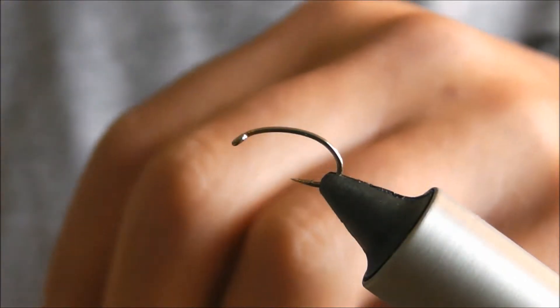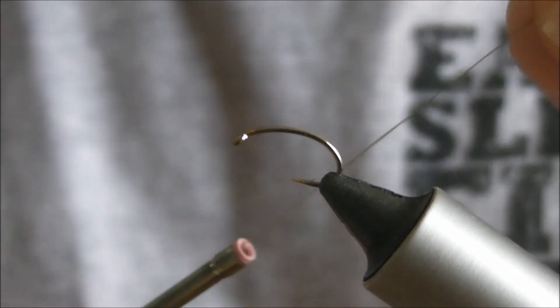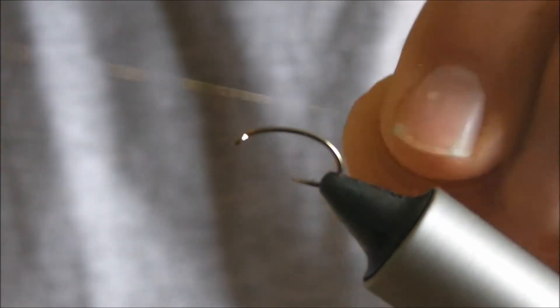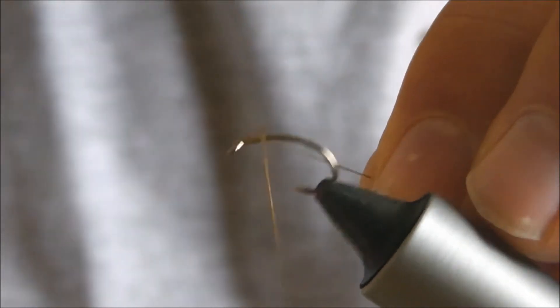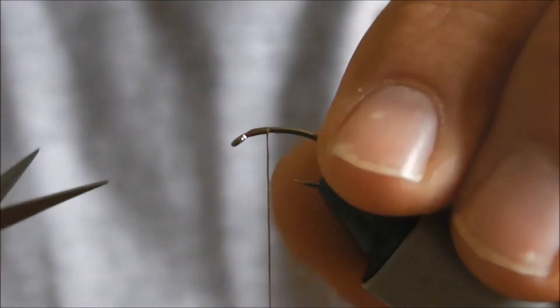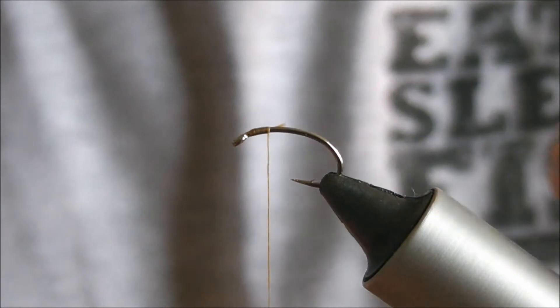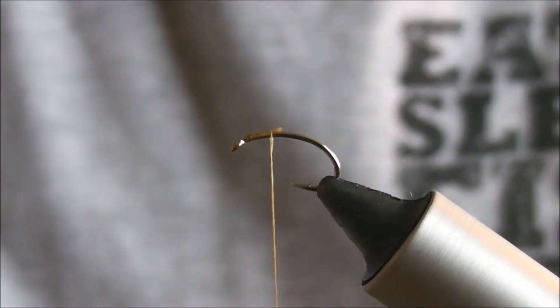So we'll show you a quick video on how to tie one. Have a go yourselves, they're really simple, doesn't require a lot of materials. This is going to be olive so I'll use an olive thread, this is a UTC thread 140. We'll just lay down a layer of thread in touching turns.